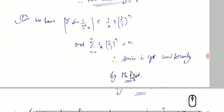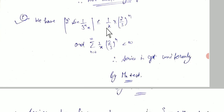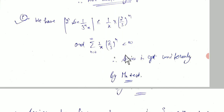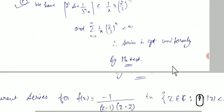For the last option: 2^n · sin(1/3^n · x) is bounded by x · (2/3)^n, which is less than ∞ since (2/3)^n is summable. So by the Weierstrass M-test, this series is uniformly convergent.